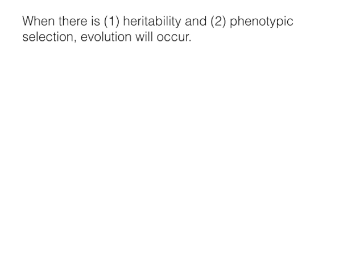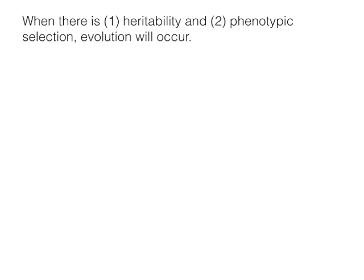Now we can take conditions one and two and break them down into smaller parts. Condition 1a is when variation in traits exists, like the height of an organism. And 1b is when that variation is partially caused by genetic differences — specifically particulate genetic differences, meaning different alleles at a locus, and possibly more than one locus.